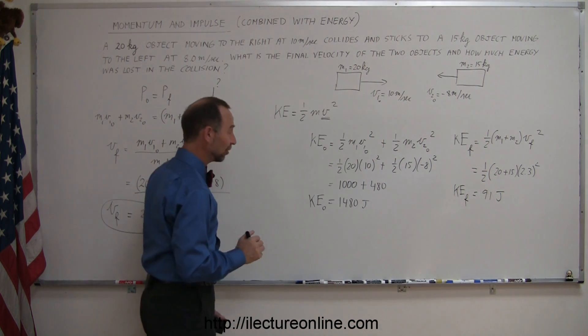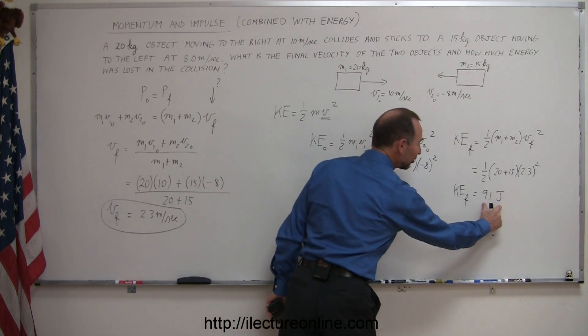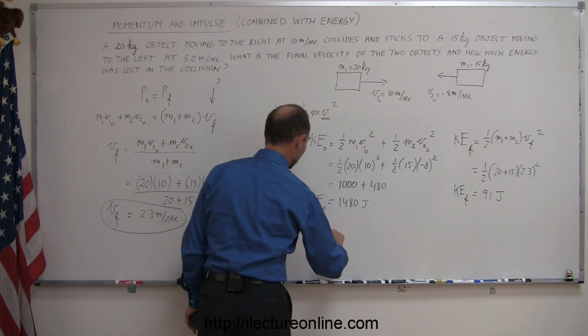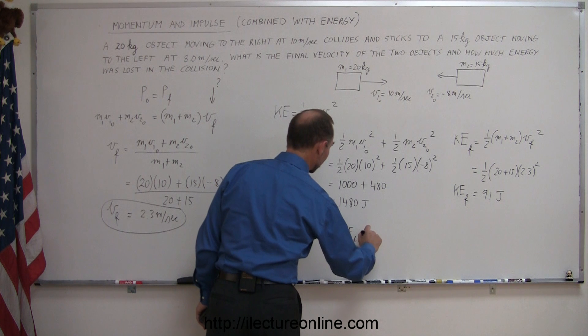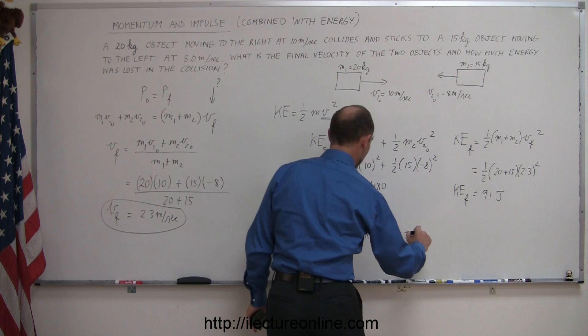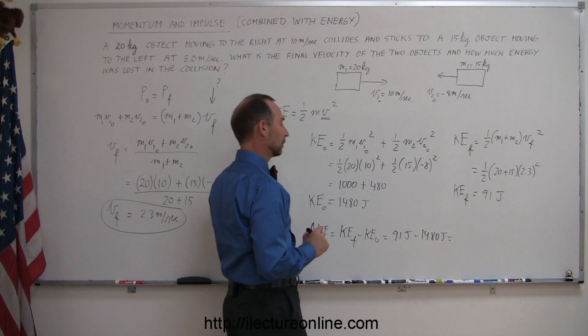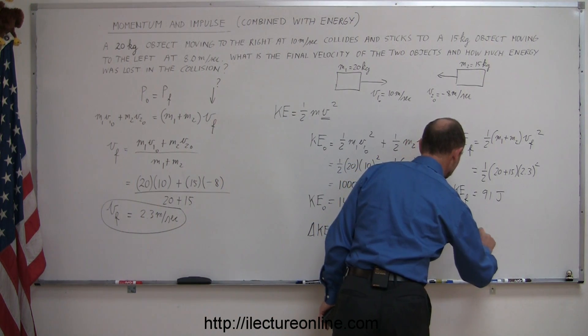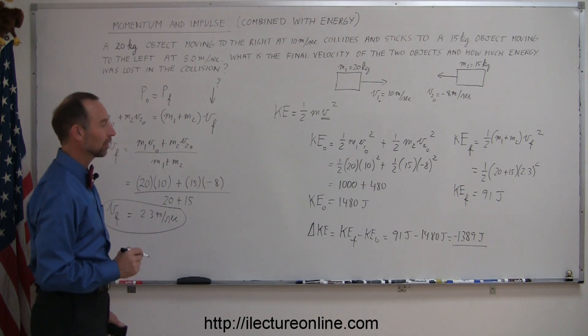So, we lost quite a bit of energy in this collision. We had this much energy before the collision, and that much energy after the collision. So the loss, the delta kinetic energy, is equal to kinetic energy final minus kinetic energy initial. So that's equal to 91 joules minus 1,480 joules. And so, that would be 1,389 joules.